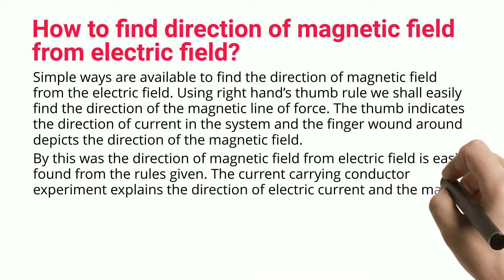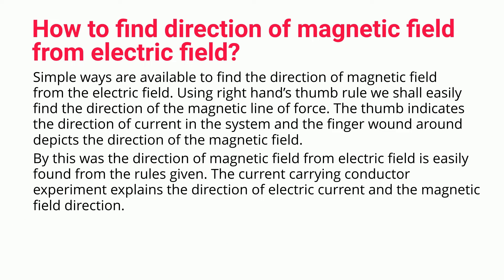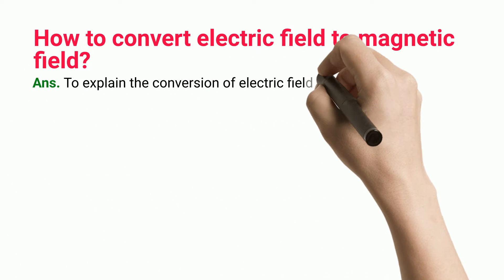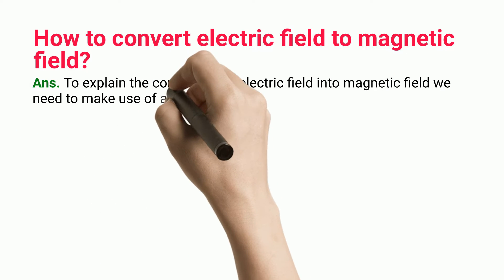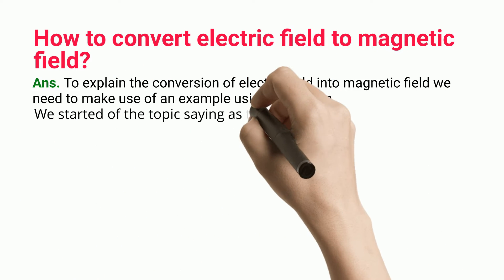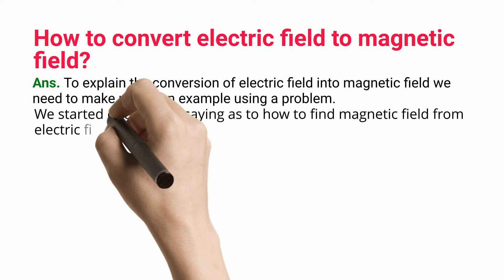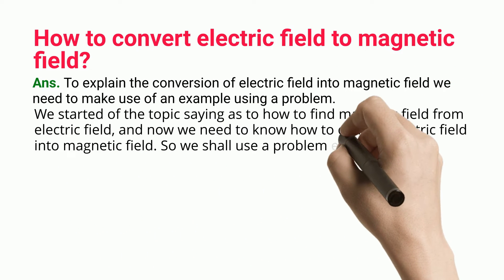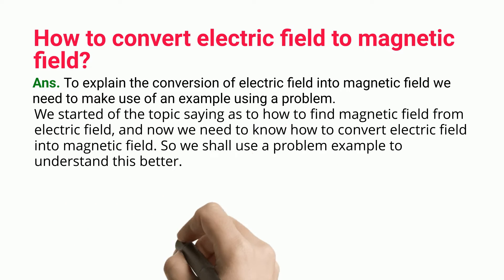The current-carrying conductor experiment explains the direction of electric current and the magnetic field direction. To explain the conversion of electric field into magnetic field, we need to make use of a problem example. We started the topic by discussing how to find magnetic field from electric field, and now we need to know how to convert electric field into magnetic field — we shall use a problem example to understand this better.